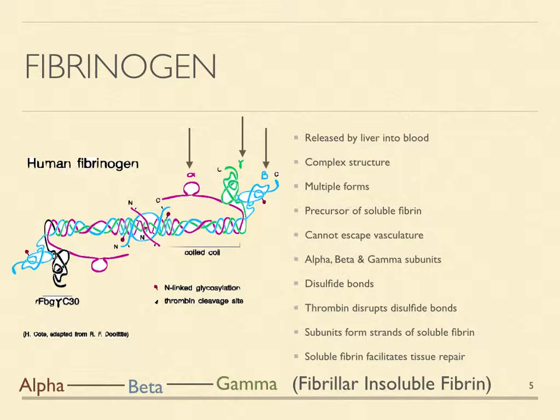Fibrinogen consists of alpha, beta, and gamma subunits connected by disulfide bonds. Thrombin disrupts the disulfide bonds and causes the alpha, beta, and gamma fibrinogen subunits to rearrange themselves into fibrillar, or two-dimensional, strands of soluble fibrin that might be likened to strands of spaghetti. These strands of soluble fibrin can escape through thrombin-induced inflammatory gaps in capillary walls and enter damaged tissues, where they create a lattice or matrix of fibers that facilitates the cellular activities of tissue repair.